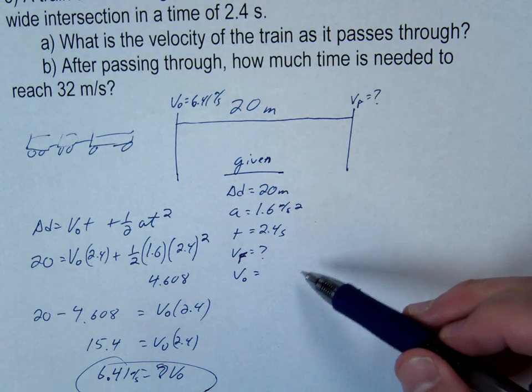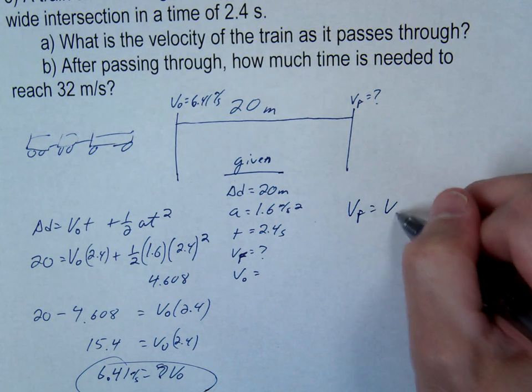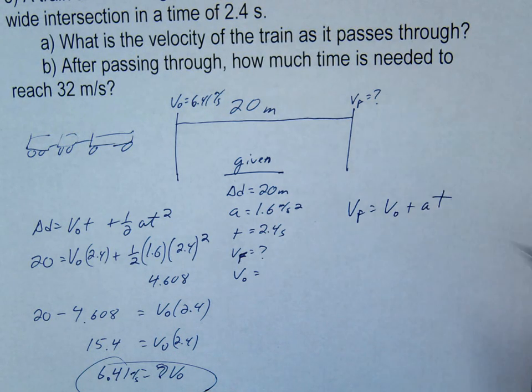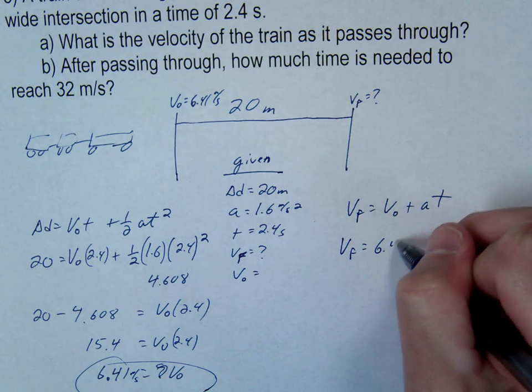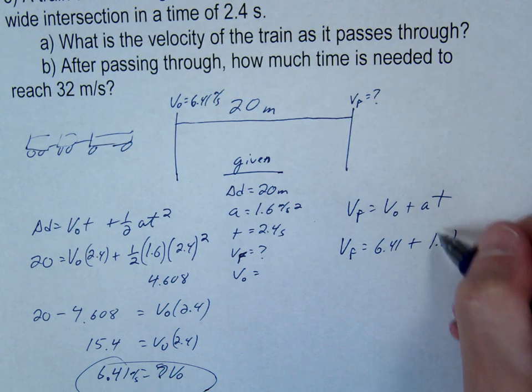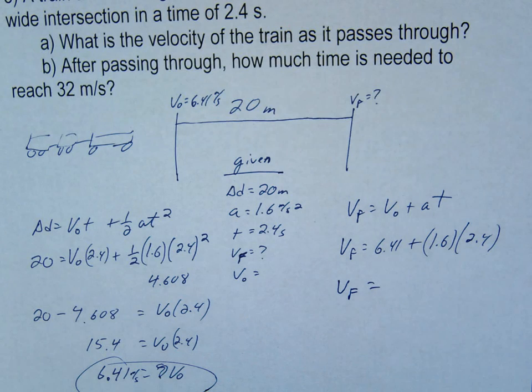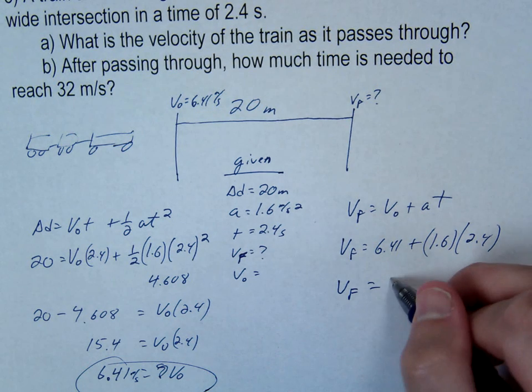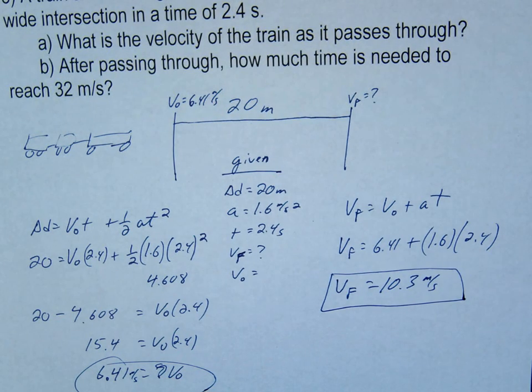Now, at this point, you can really use three equations to find V final. And you're stuck because you have to use the initial here. So, I'm going to use this one. So, V final equals 6.41, 1.6, 2.4. What's our V? 10 point something? 10.25. So, just go ahead and round it to three. 10.3 meters per second at the end.